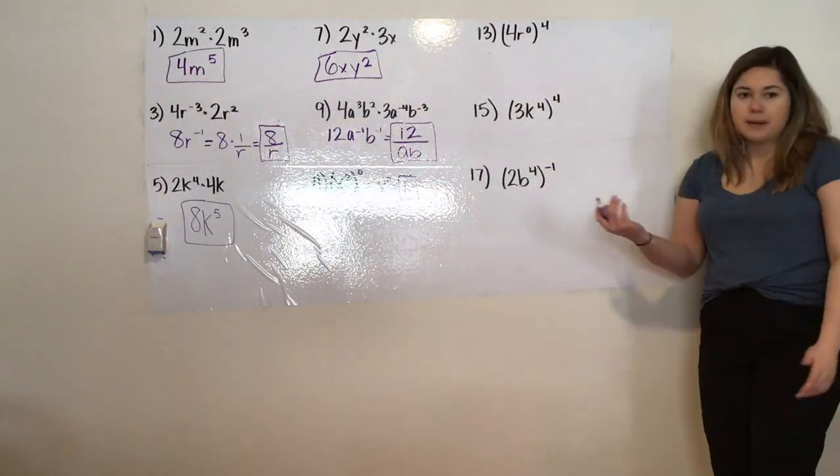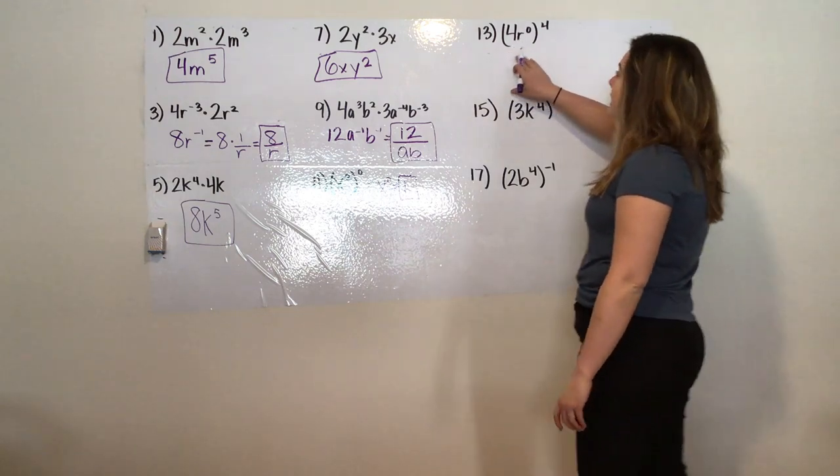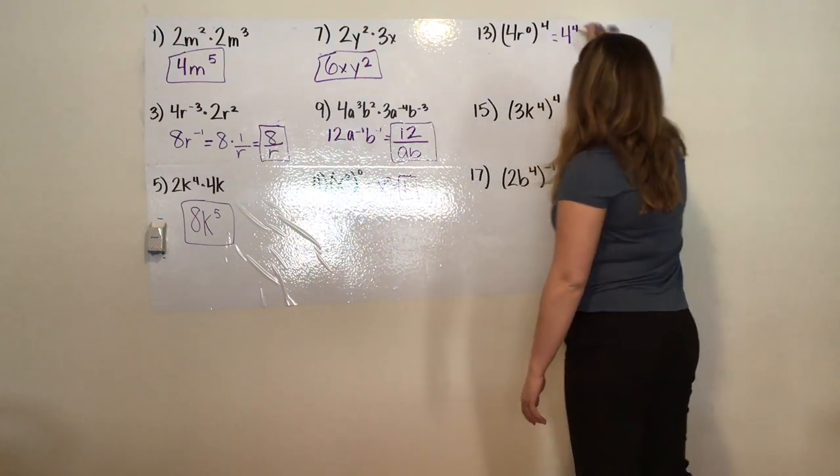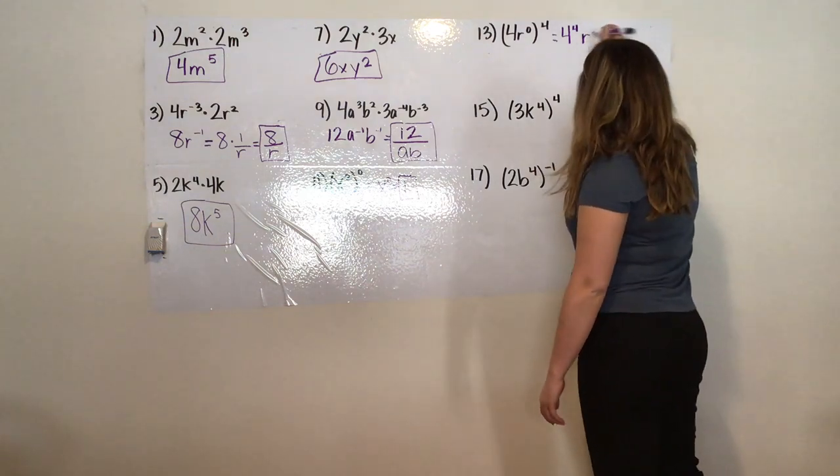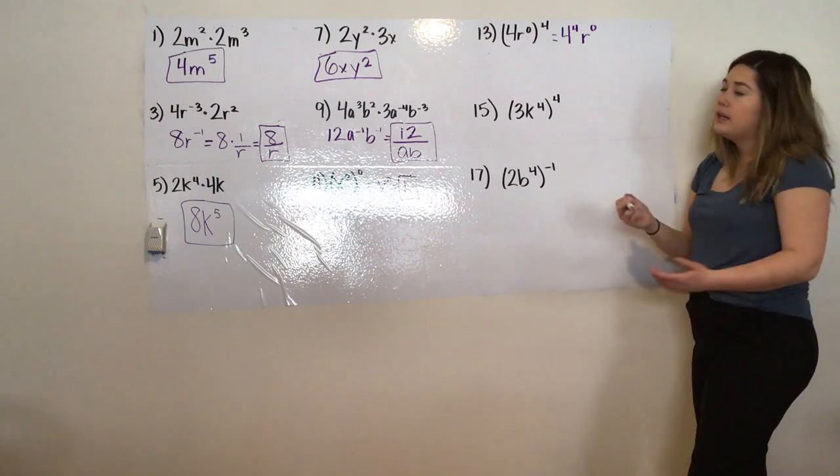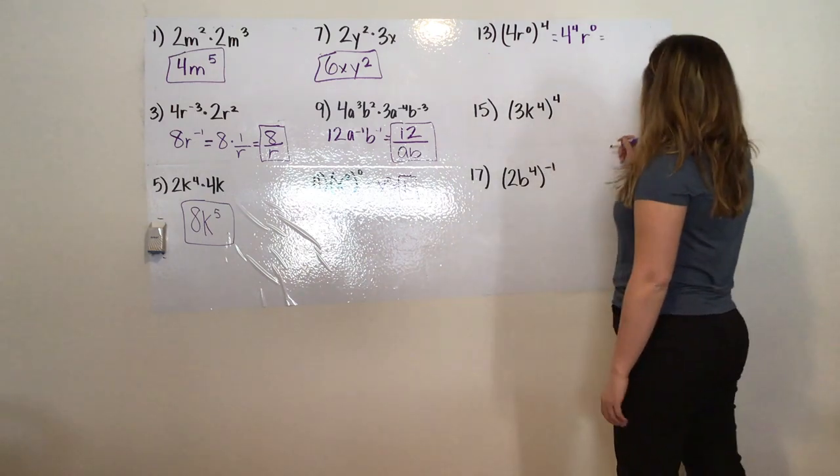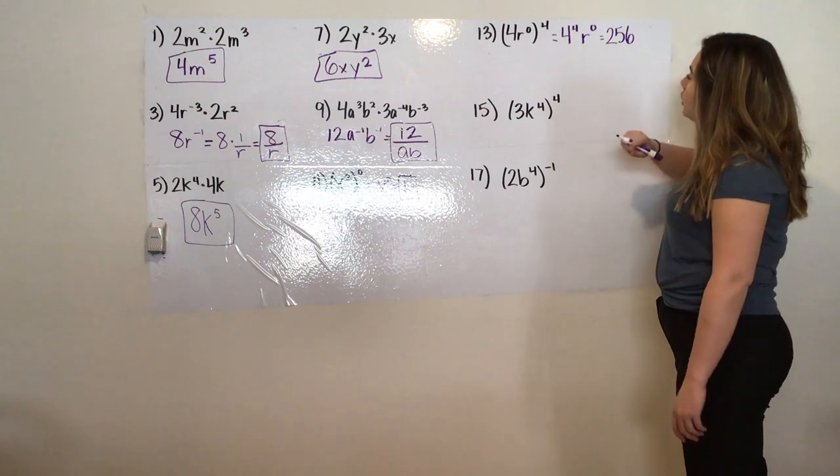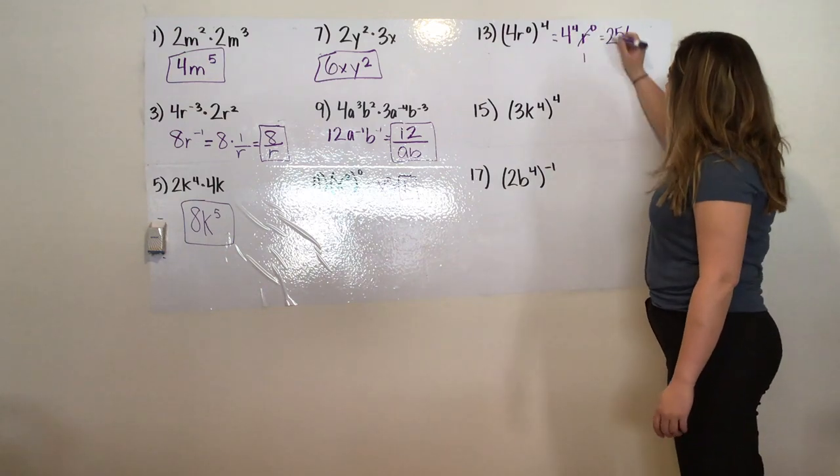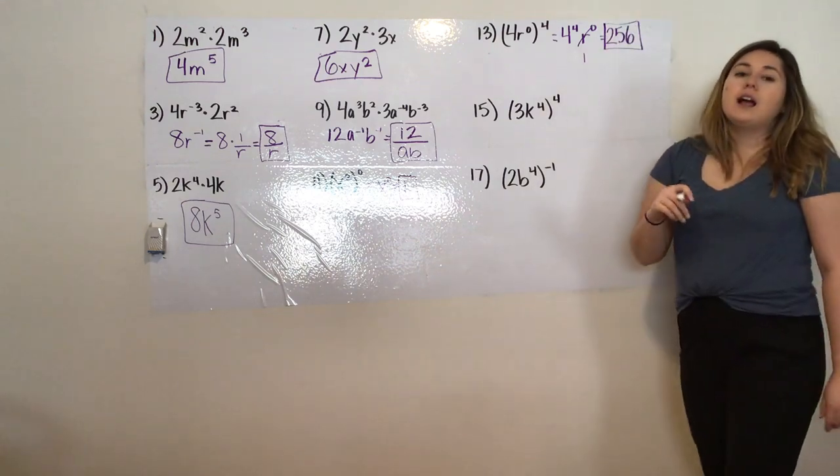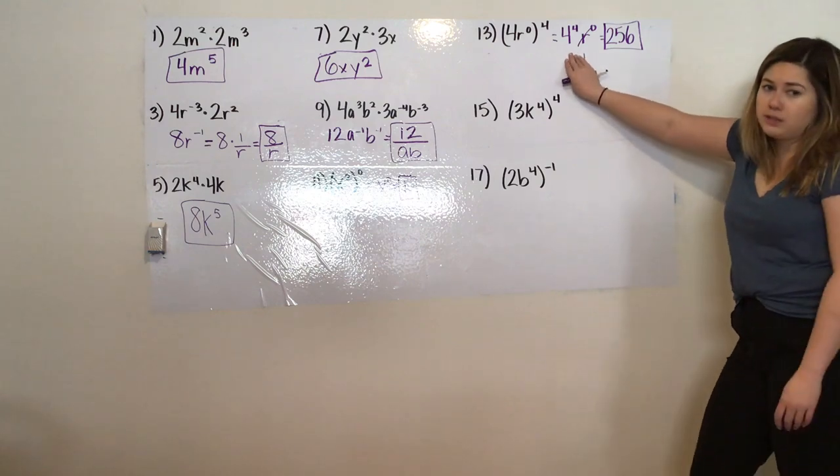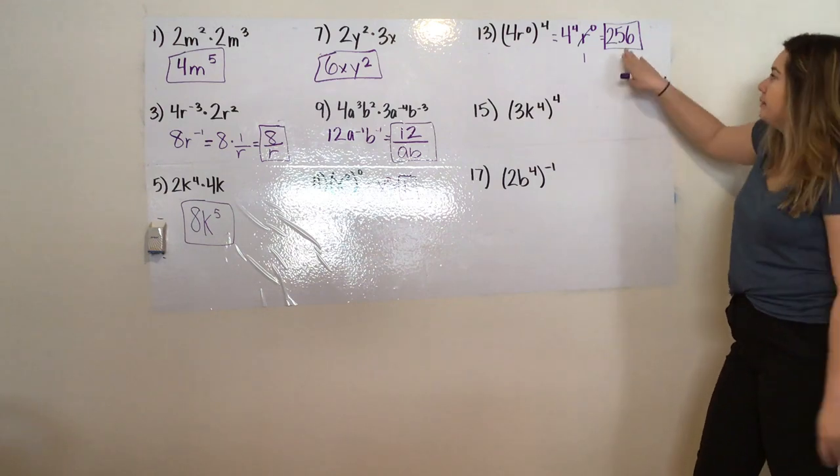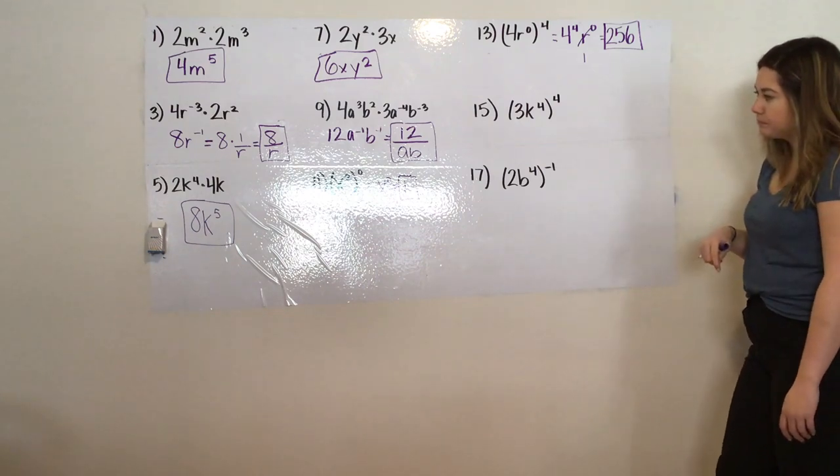Next one, 13, same thing, but remember with that power rule, I'm going to distribute everything within the parentheses with that power. So I really have 4 to the power of 4, and then I have r to the 0, because 0 times 4 is 0. And so then I know 4 to the power of 4 is 256, and r to the power of 0 again just becomes 1, so my answer is 256. As I mentioned in previous videos, we could write 4 to the power of 4, but sometimes if it's an easy or small enough number, we can go ahead and evaluate it in standard form.